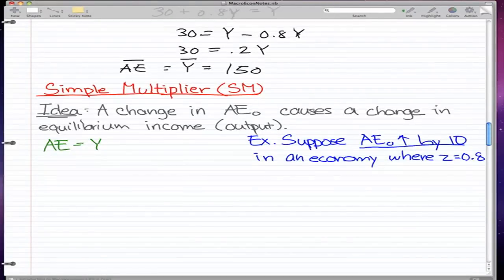In this video we're going to talk about the simple multiplier. The idea of the simple multiplier is that a change in autonomous expenditure will cause a change in equilibrium income or output. We start off with our formula which we should be familiar with by now, and we should also be familiar with AE being equal to...